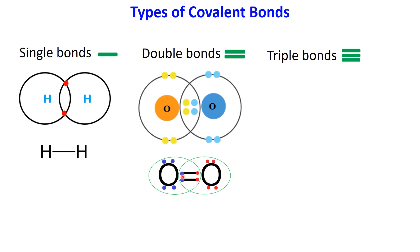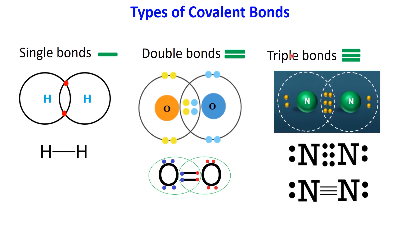A triple covalent bond forms when two atoms share three pairs of electrons. One of the most common examples of a triple bond is the nitrogen molecule, N2. In this molecule, each nitrogen atom shares three of its electrons with the other, creating three shared pairs of electrons and forming a strong triple bond.